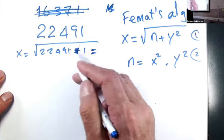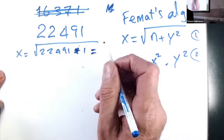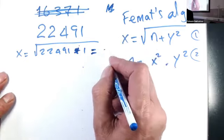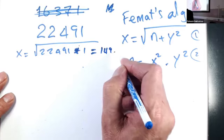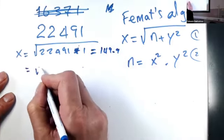So what's the square root of 22492? 149.9. So then it doesn't work. Then we go for two.